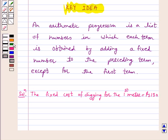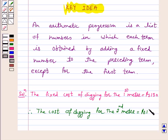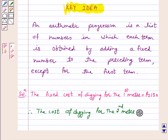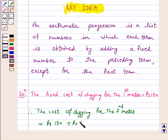Therefore, the cost of digging for the second meter is rupees 150 plus rupees 50 which is equal to rupees 200.